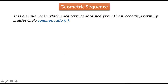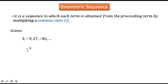A geometric sequence is a sequence in which each term is obtained from the preceding term by multiplying a common ratio. Take this example: 3, negative 9, 27, negative 81, and so on. If we divide negative 9 by its preceding term, 3, the ratio is negative 3.